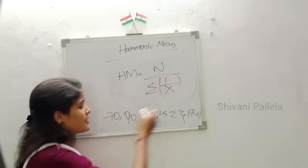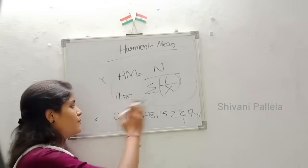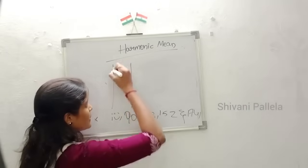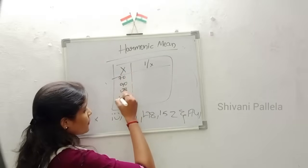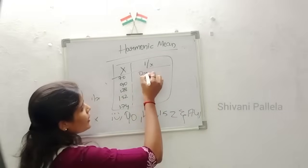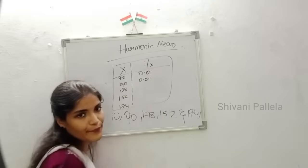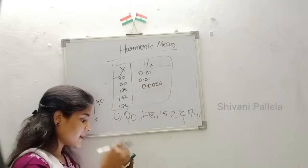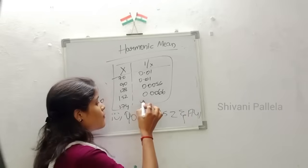To find the harmonic mean, we calculate the 1/X column: 1/70 = 0.01, 1/90 = 0.01, 1/178 = 0.0056, 1/152 = 0.0066, 1/174 = 0.0057. We then total all these 1/X values.